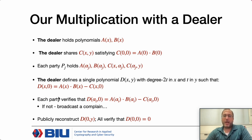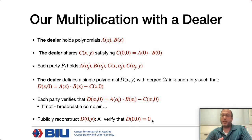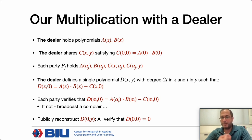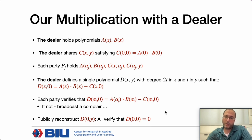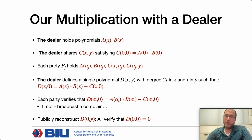After verifying that the two polynomials are the same, the dealer publicly reveals the polynomial D(0,y) and all parties verify the constant term is 0. This is just a weak secret sharing, so the reconstruction might not work—but if it doesn't, the dealer is corrupted and we can reconstruct A and B and learn the constant term. Essentially, we only need one single VSS: one weak secret sharing of a degree-2t polynomial.